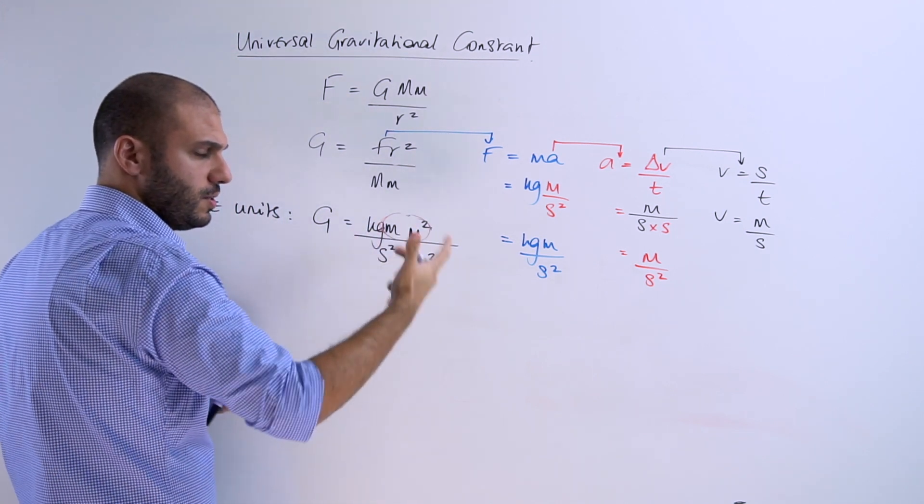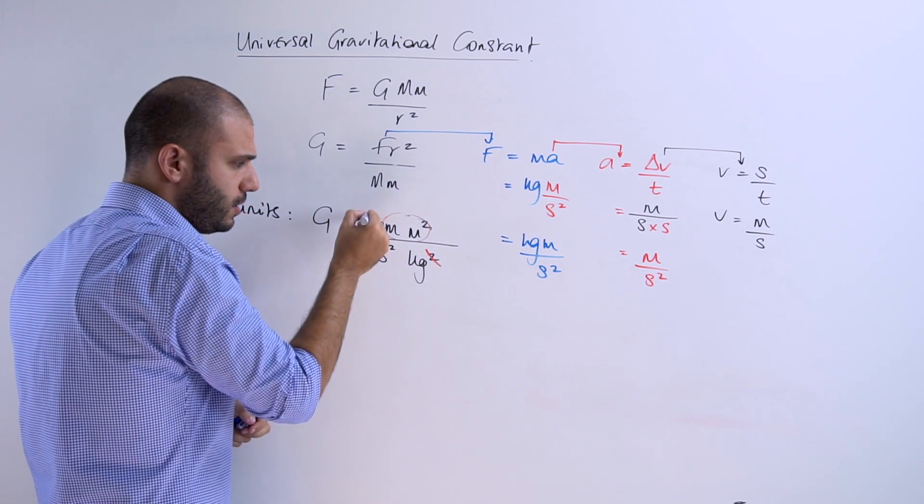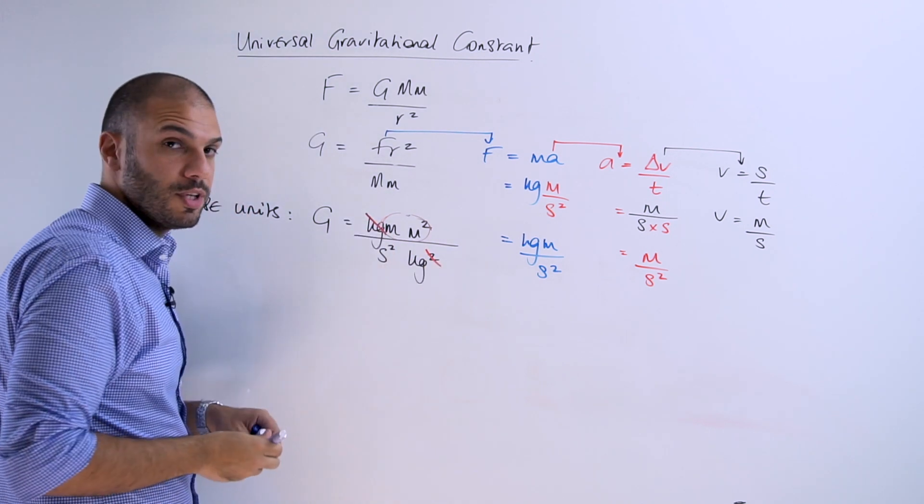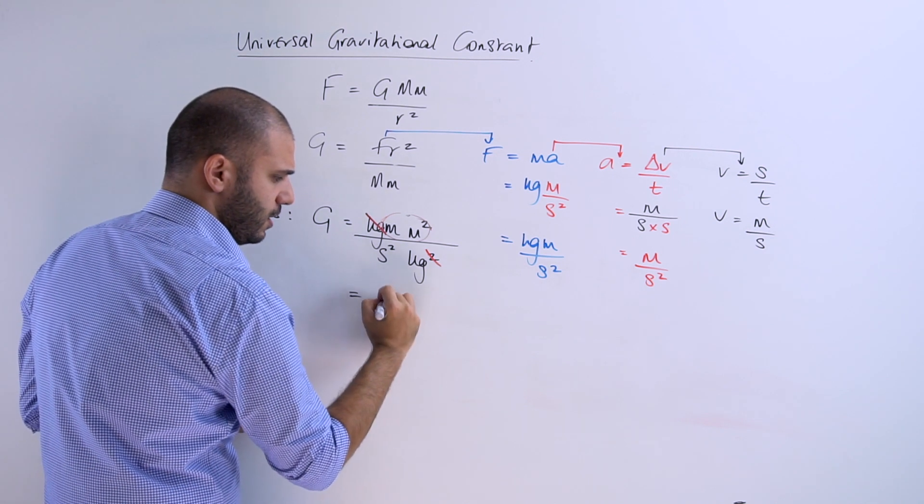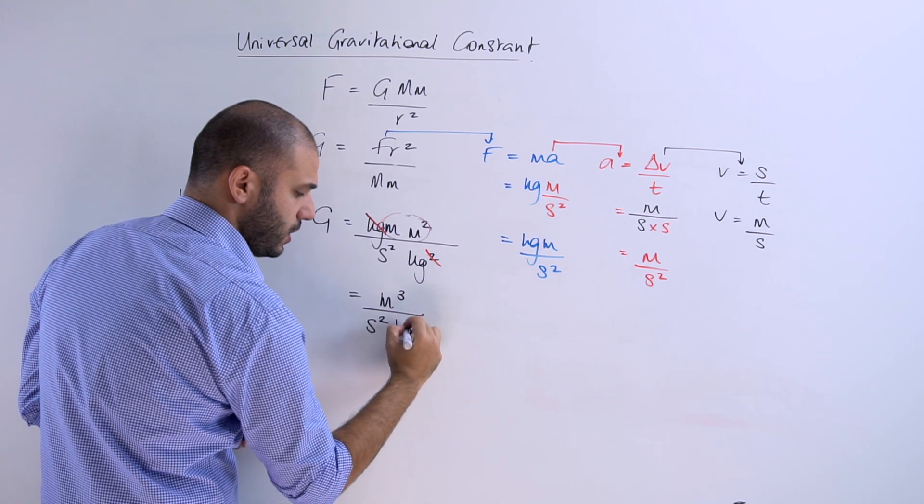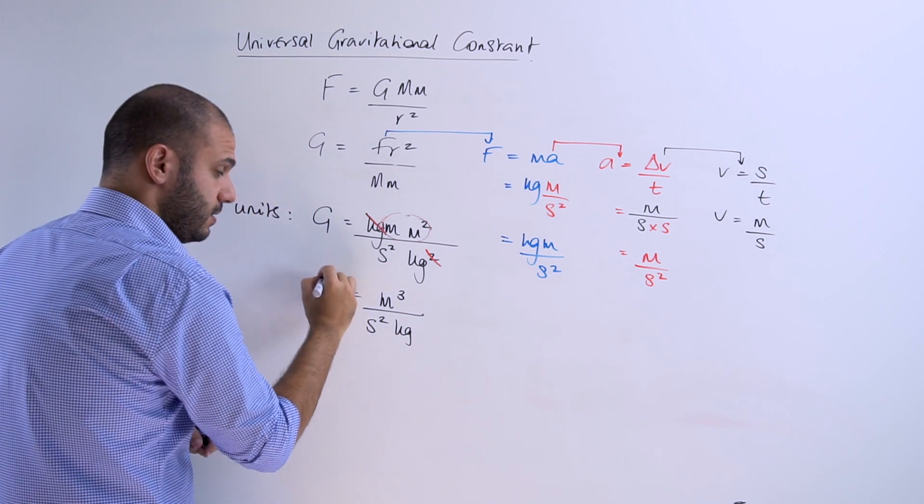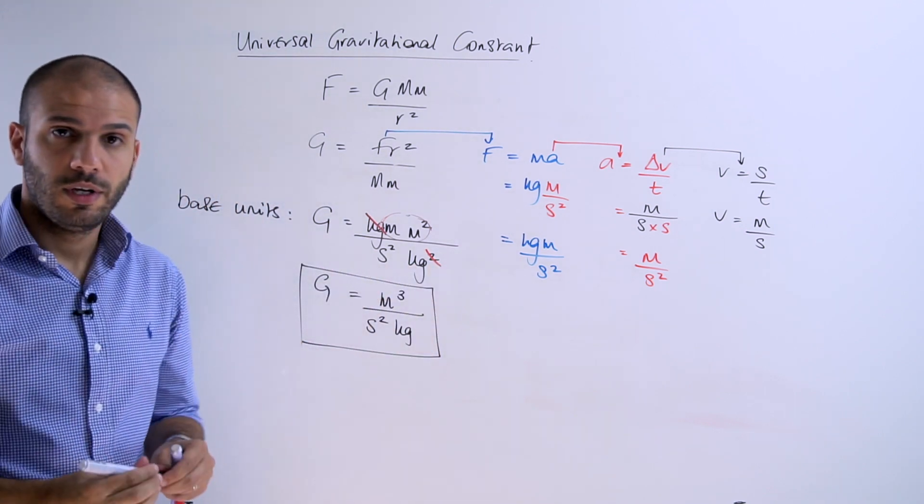That's a meter squared and that's another meter. So that's going to come up to meters cubed. But we can do away with one of the kilograms in the numerator. And that will end up with meters cubed divided by a second squared kilogram. And that is the base unit for G.